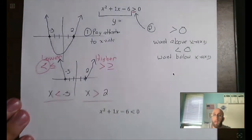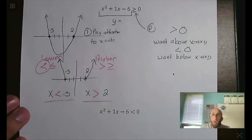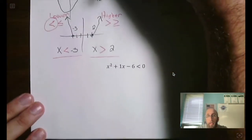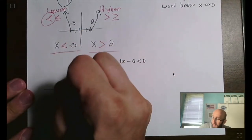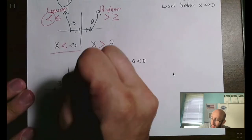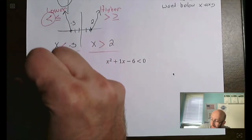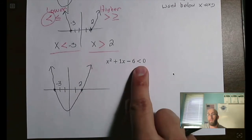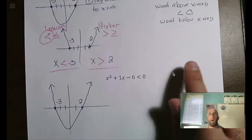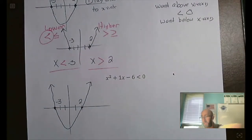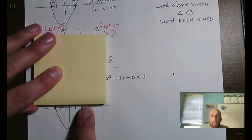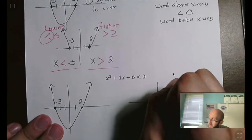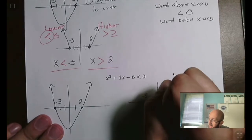The only thing that would change is if you had an equal to — then these would include the equal to as well. Now I have a second example using the same equation but with the inequality flipped, just to show what happens. It's the same graph with x-intercepts at negative 3 and 2, but this time the inequality says less than zero, which means we want below the x-axis — the segment between negative 3 and 2.